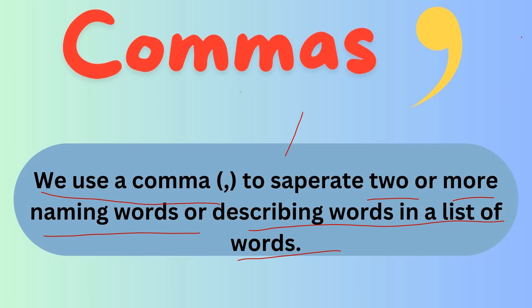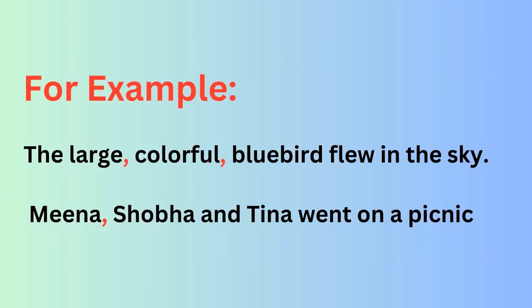So we use commas to separate two or more naming words, describing words. As the examples have been mentioned: 'The large, colorful, blue bird flew in the sky.' Here, large, colorful, and blue are describing words about the bird — bird is large, colorful, and blue. So these are the describing words, and we put commas between describing words.